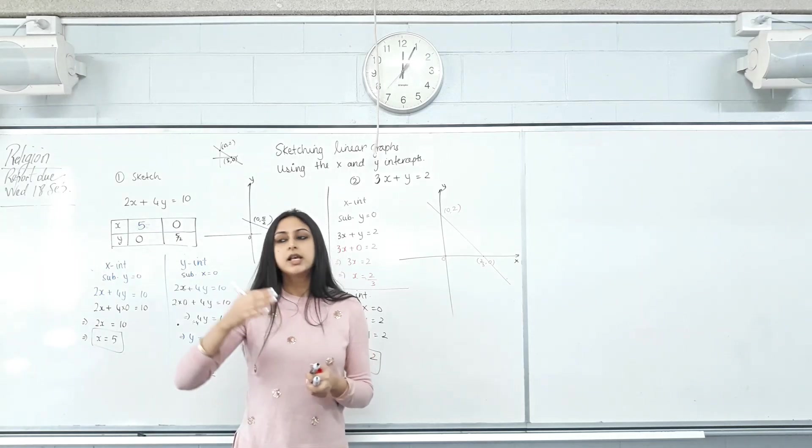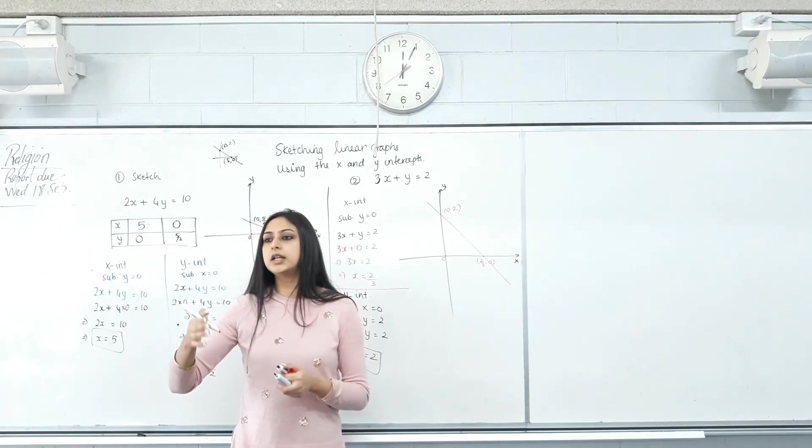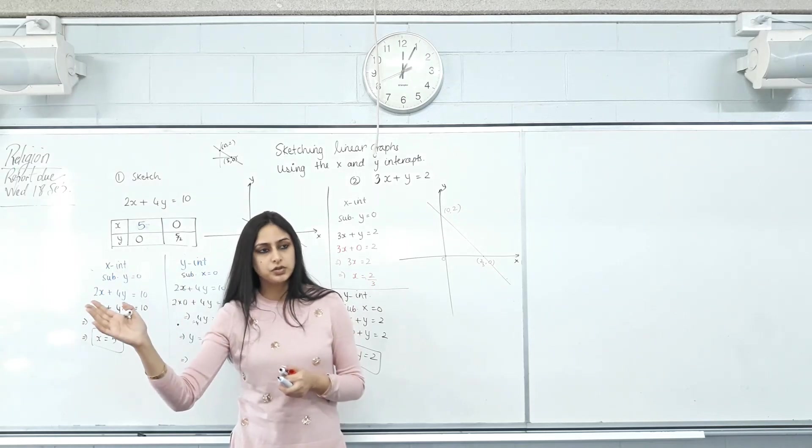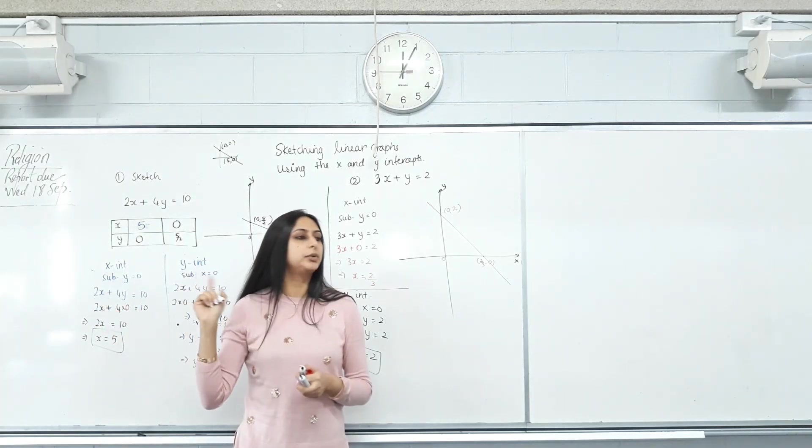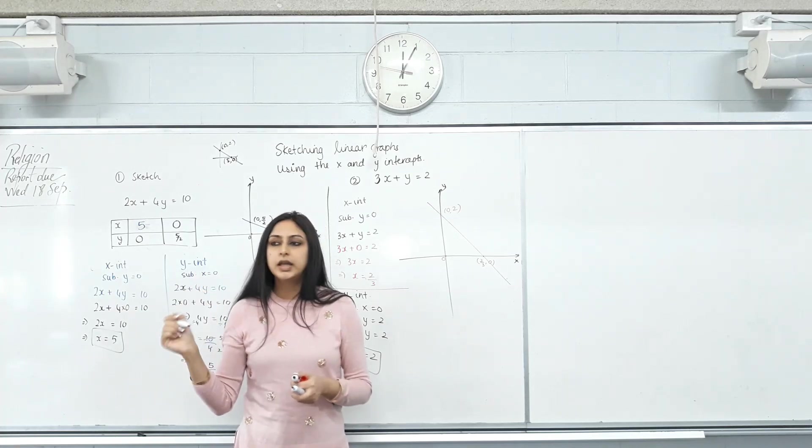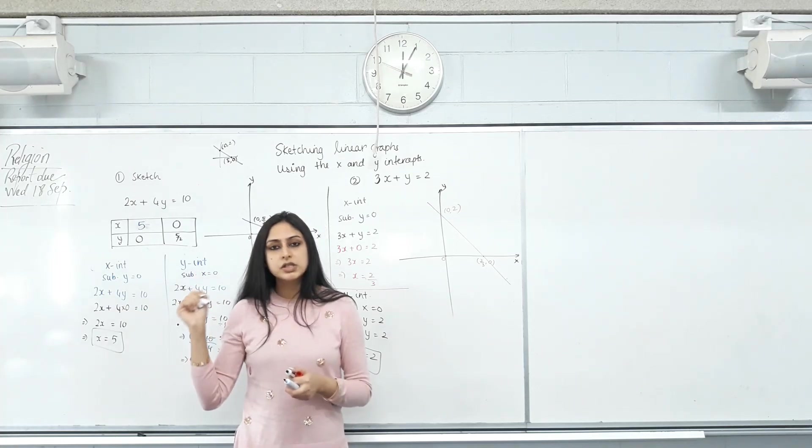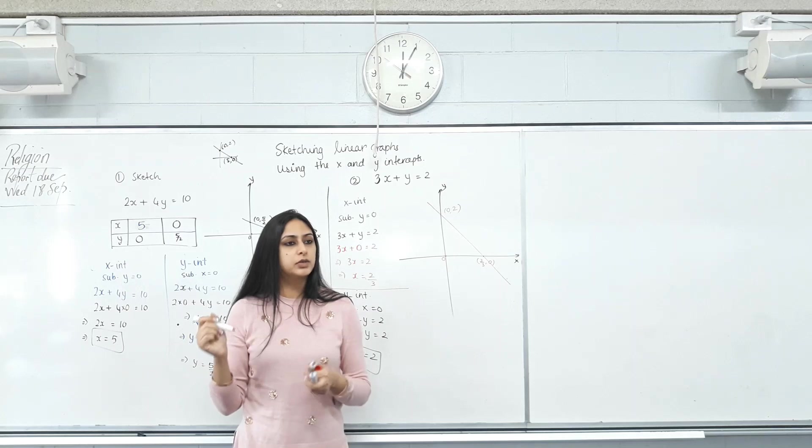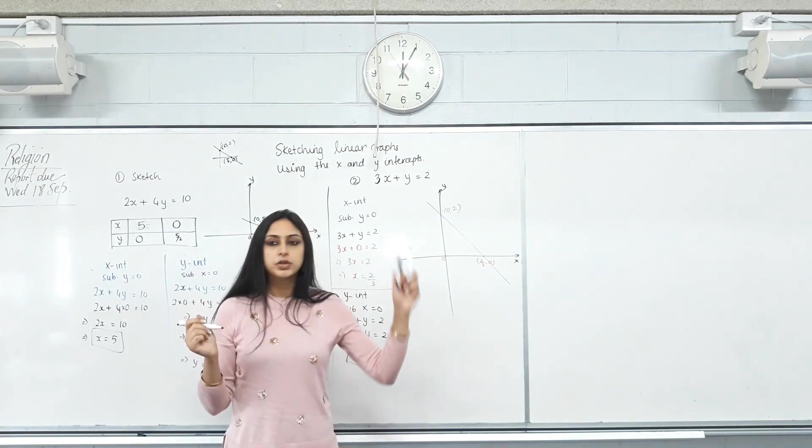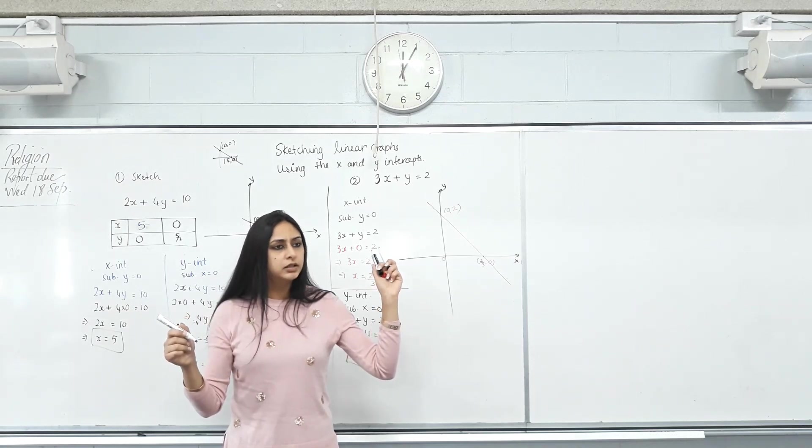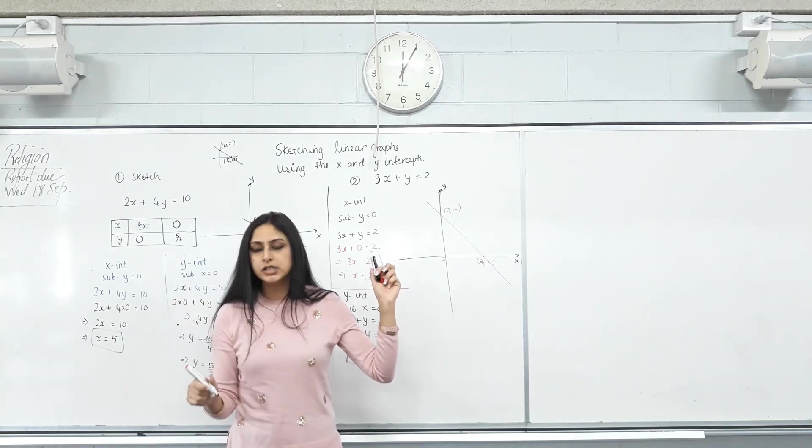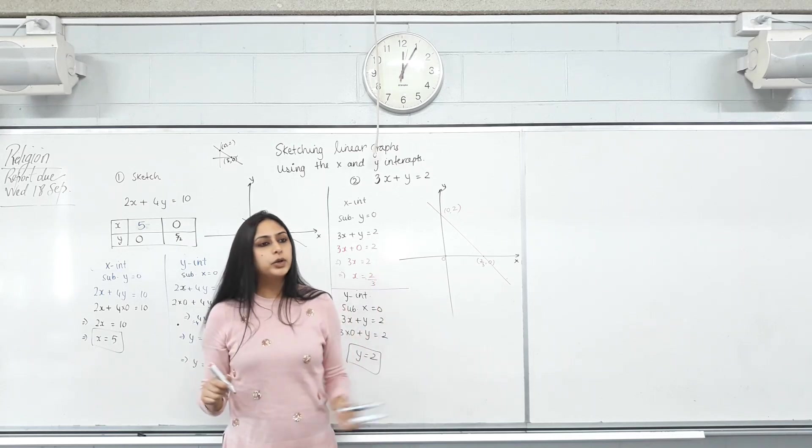So if in the exam or the test, the question says sketch using the gradient and intercept method, that's when you sketch using that method. Otherwise, follow this method because you must label the X and Y intercepts for any graph you draw. So this is quicker. You then don't have to find the X and Y intercepts because that's all you found anyways. So this is the preferred method. When do we use the other method? If the question asks for it. Any questions?